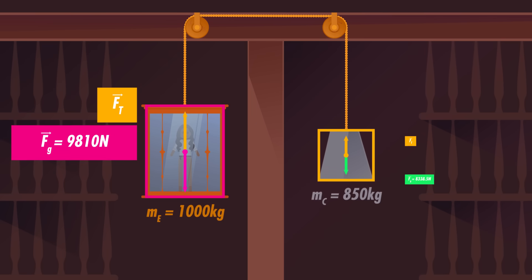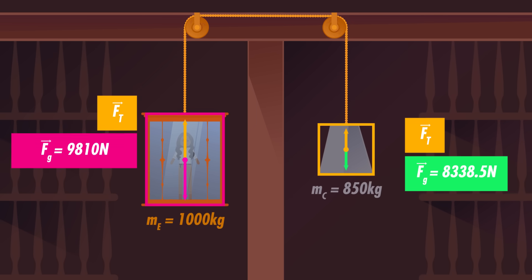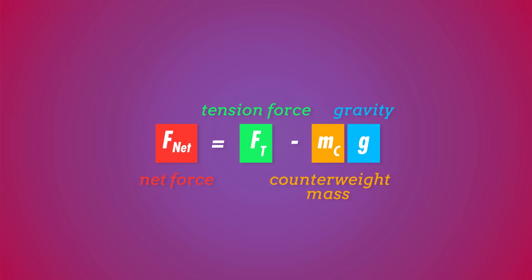Since Newton's second law tells us that F net equals ma, we can set all of that equal to the lift's mass times some downward acceleration, negative a — that's what we're trying to solve for. So let's do the same thing for the counterweight. Gravity is pulling it down with 8338.5 newtons of force in the negative direction, and the force of tension is pulling it up, so the net force equals the tension force minus the mass of the counterweight times small g. And because of Newton's second law, that equals the mass of the counterweight times that same acceleration a — positive this time, since the counterweight is moving upwards. Putting all of that together, we end up with two equations and two unknowns: the tension force and the acceleration. When you have a system of equations like this, you can add or subtract all the terms on each side of the equals sign to turn them into one equation. Subtracting the first equation from the second gets rid of the term that represents the tension force.